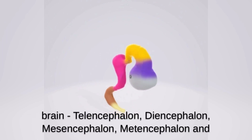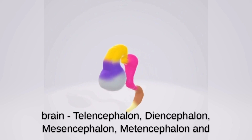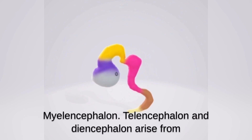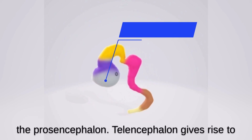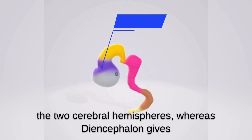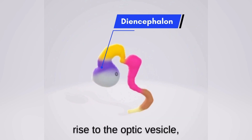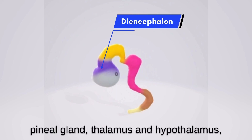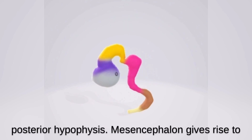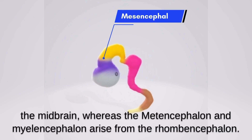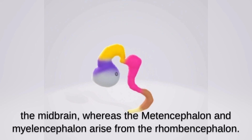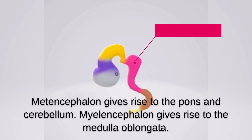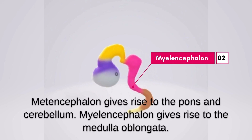The secondary vesicles are: telencephalon, diencephalon, mesencephalon, metencephalon, and myelencephalon. Telencephalon and diencephalon arise from the prosencephalon. Telencephalon gives rise to the two cerebral hemispheres, whereas diencephalon gives rise to the optic vesicle, pineal gland, thalamus, hypothalamus, and posterior hypophysis. Mesencephalon gives rise to the midbrain, whereas the metencephalon and myelencephalon arise from the rhombencephalon. Metencephalon gives rise to the pons and cerebellum, and myelencephalon gives rise to the medulla oblongata.